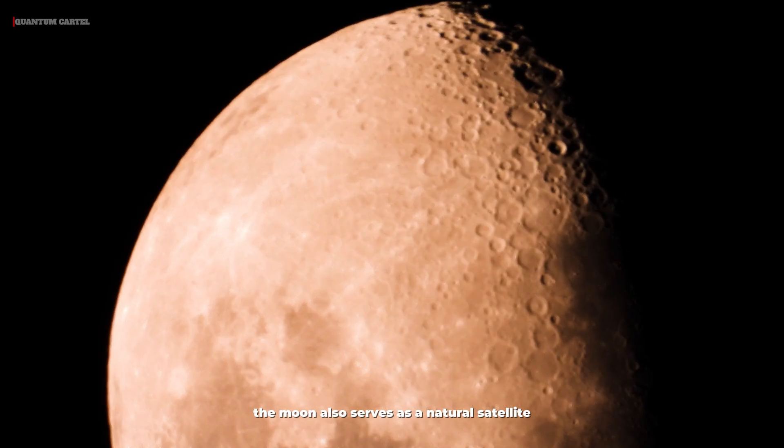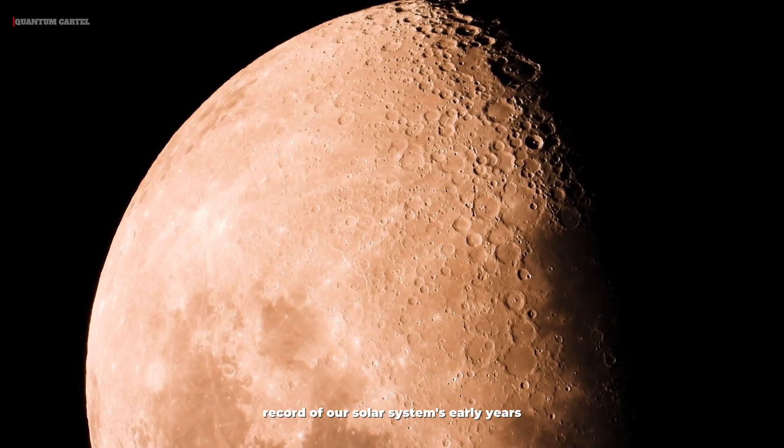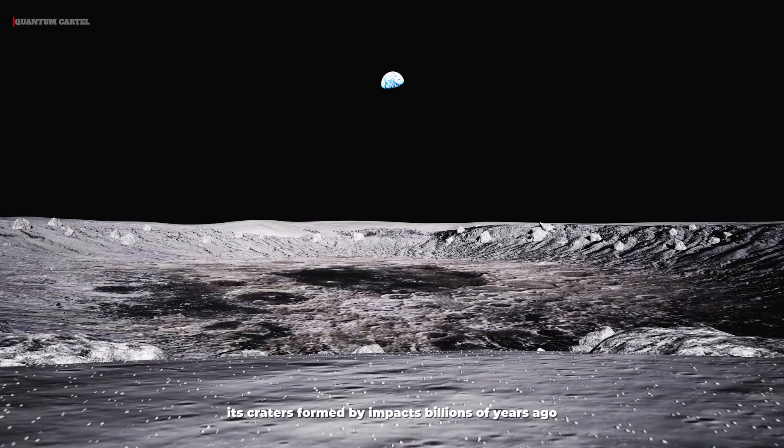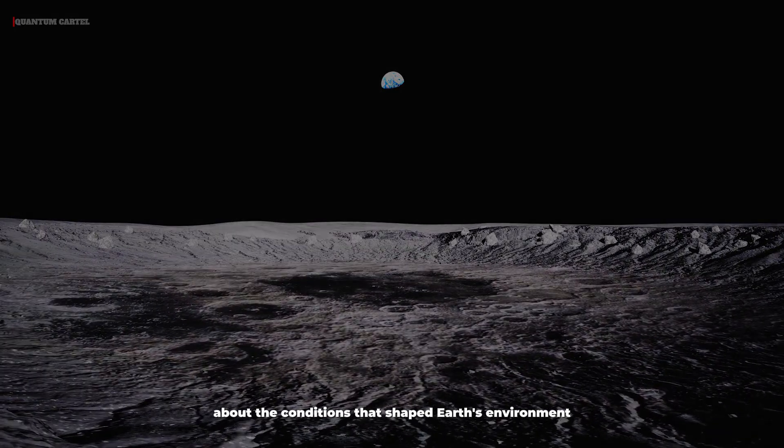The Moon also serves as a natural satellite, offering a historical record of our solar system's early years. Its craters, formed by impacts billions of years ago, hold clues about the conditions that shaped Earth's environment.